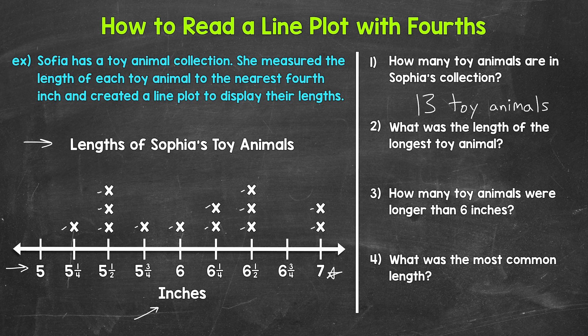Moving on to number two: what was the length of the longest toy animal? We need to look for the greatest number on the number line with at least one X above it. That's going to be seven — seven inches. There are actually two animals that measured seven inches. So the length of the longest toy animal is seven inches.